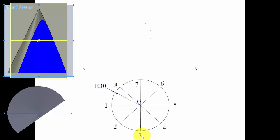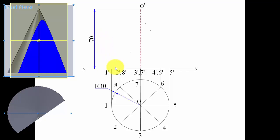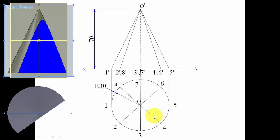When you try to look at this from the front, draw projector lines from points 1, 2, 8, and so on. These are the intersection points at the base in the front view — this is 1-dash, this is 2-dash and 8-dash, and so on. The axis length is 70 millimeters. Now draw the generators from 1-dash to O-dash, from 2-dash to O-dash, and from 8-dash to O-dash, and so on.